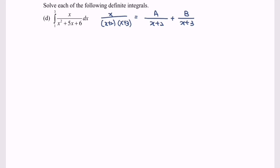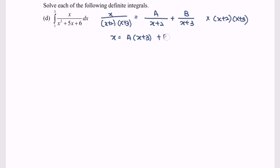Next, multiply both sides with (x plus 2)(x plus 3) and we will obtain: x equals A multiplied by (x plus 3) plus B multiplied by (x plus 2). So now we are going to find the values of A and B.